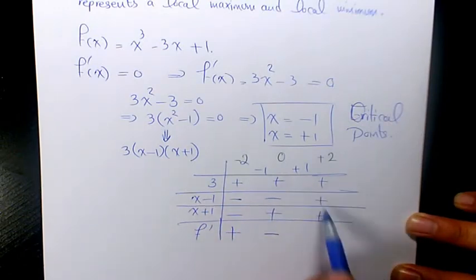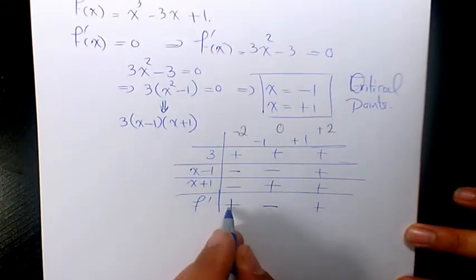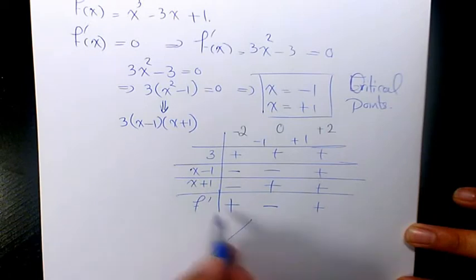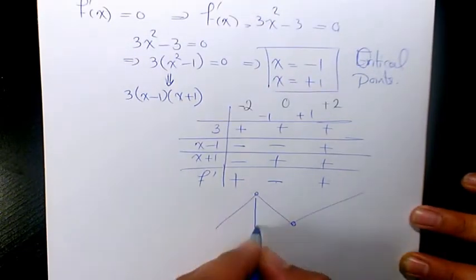So f' is positive, which means it's increasing. f' is negative here, which means it's decreasing. And f' is positive here, which means it's increasing. So we have one local maximum and one local minimum. At x equals